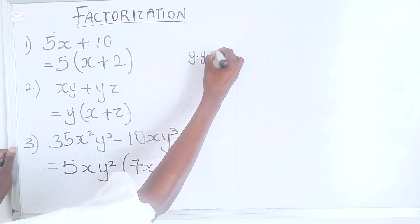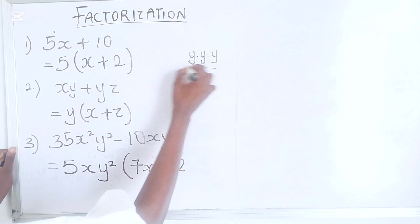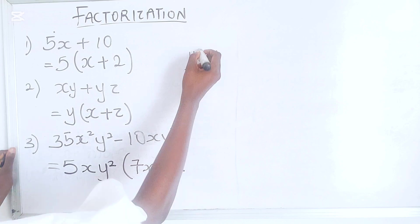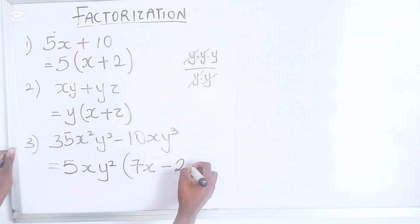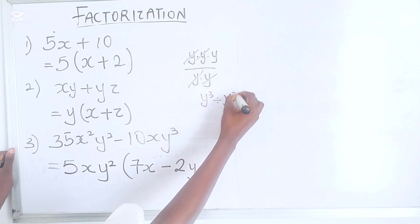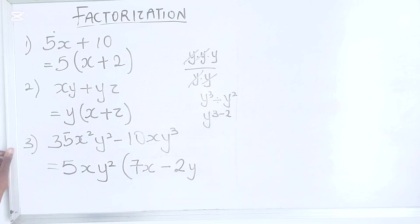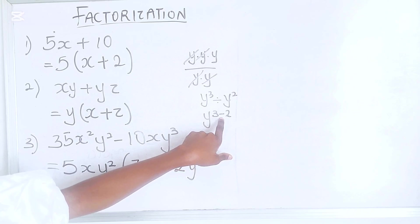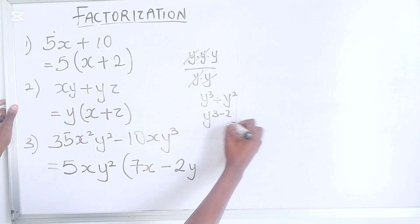Y cubed is Y, Y, Y in three places. And Y squared is Y, Y. So this is gone, this is gone, you're left with 1Y. Or remember your indices. Y cubed divided by Y squared is the same as Y cubed minus 2. The division changes the power. The division means you subtract the power, right? So you're left with Y.